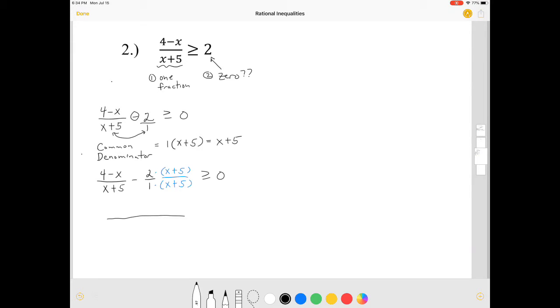All right, now, simplifying. My denominator now is x plus 5 for both fractions. On top, I have the first fraction, 4 minus x. From the second fraction, if you distribute the 2, you get 2x plus 10. And remember, you are subtracting that. So it's minus 2x minus 10, greater than or equal to 0.